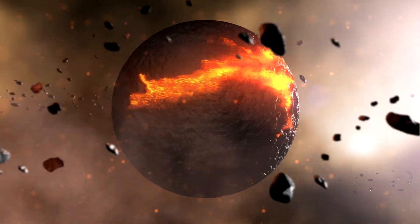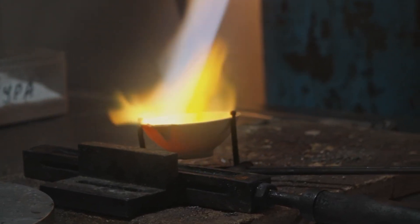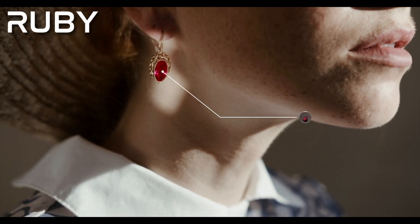To find a planet with jewels showering down on its surface, one must first look for a world that is very hot. And by hot, we mean extremely hot. Gemstones need an incredibly high temperature to vaporize. Take Ruby, for instance.